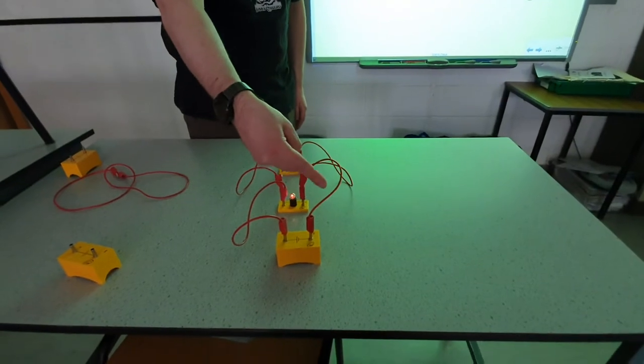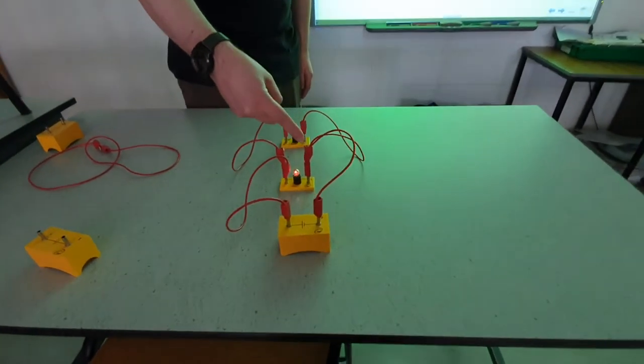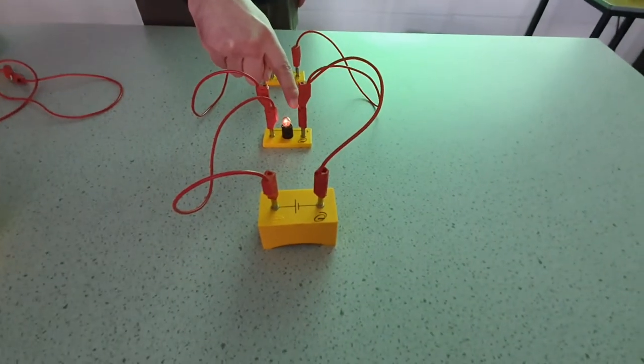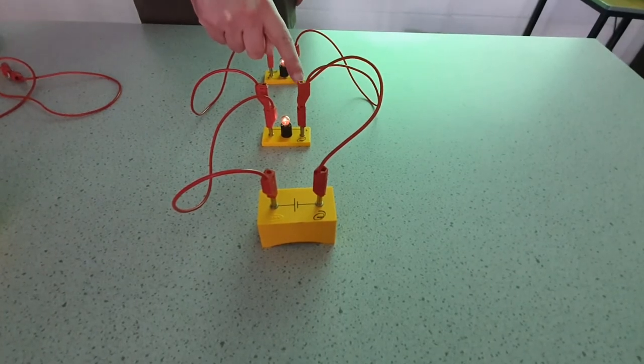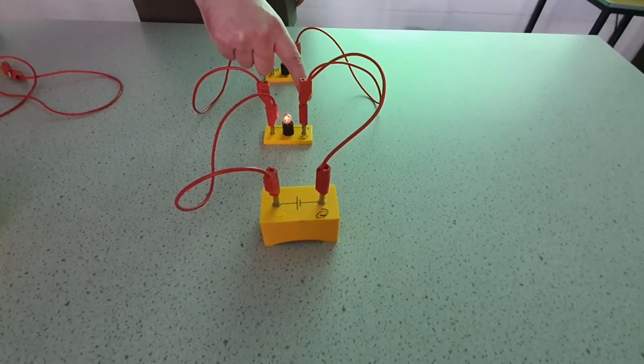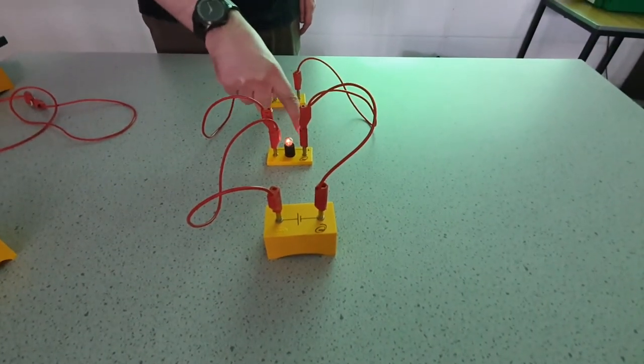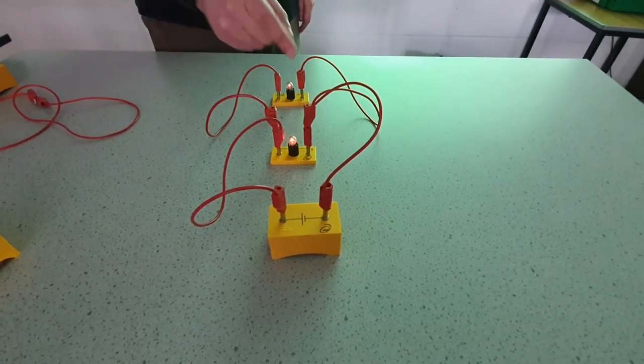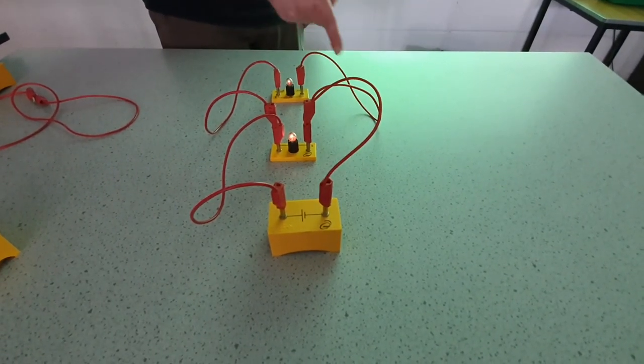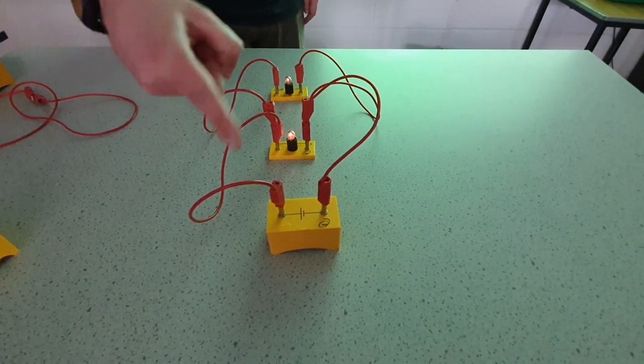So the current comes out of here, comes down here and comes into this bottom socket. But because that's connected to this top one, the current will split up. Some of it's going to come through here, going through the bulb and coming back to the battery, and some of it is going to come down here, go through this one and come back to the battery.